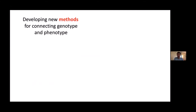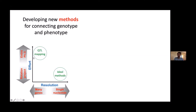One of the major goals in my lab is to develop new and improved methods for connecting genotype and phenotype. We think of it in terms of two axes — effort and genomic resolution. QTL mapping typically takes several years or an entire PhD and gives low resolution: high effort, low resolution. Ideally we would want the opposite — high resolution and hopefully low effort — and that's what we're working towards.